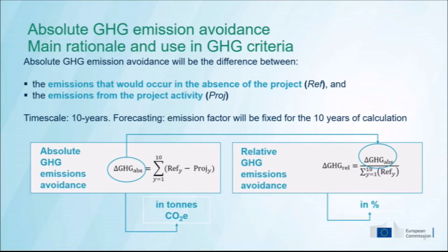The score itself is composed of two elements. One is the absolute greenhouse gas emission avoidance, which is the difference between the emissions that would occur in the absence of the project and the emissions from the project activity. The other component is the relative emission avoidance, which is calculated as a percentage — basically the absolute emission avoidance divided by the emissions in the reference case.